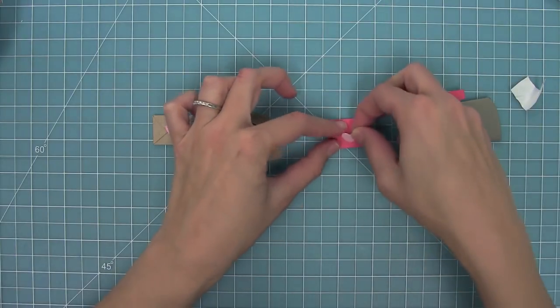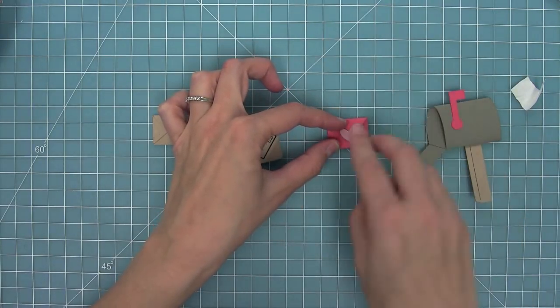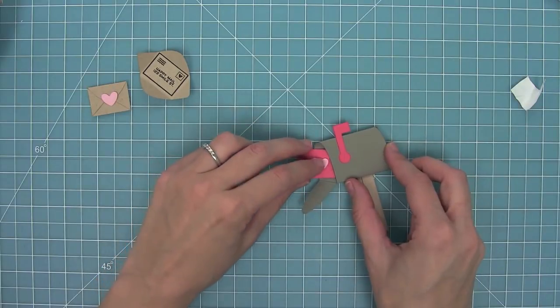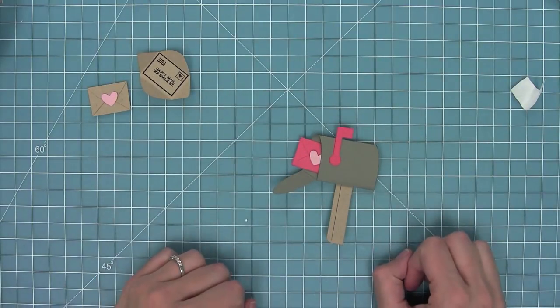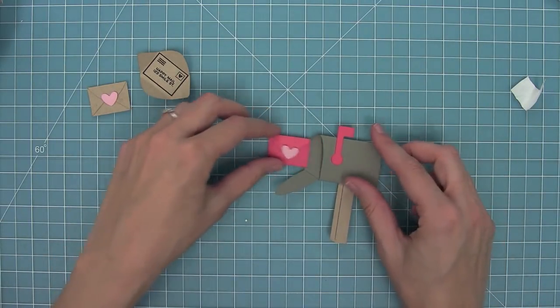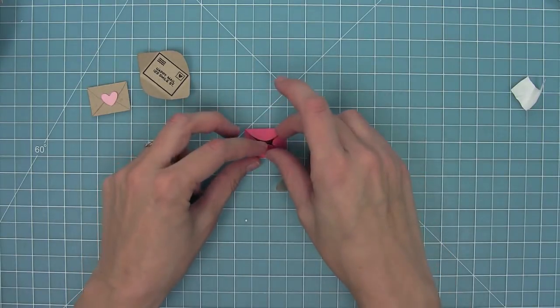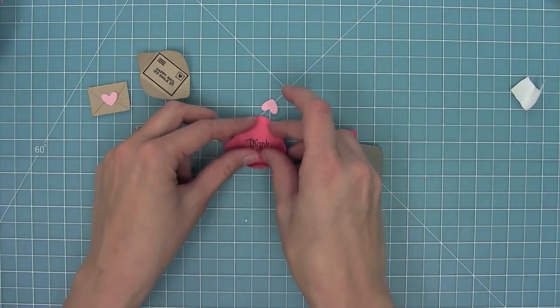I'm going to take that right there and layer it on top closing it shut but making it really easy to open too. You can tuck it in the mailbox just like that and then we can pull it out, remove that heart and see the sentiment on the inside which I think is so sweet.